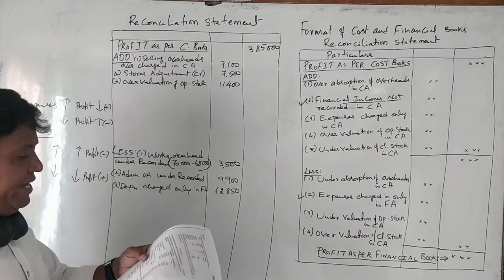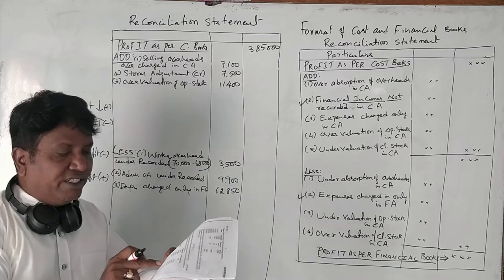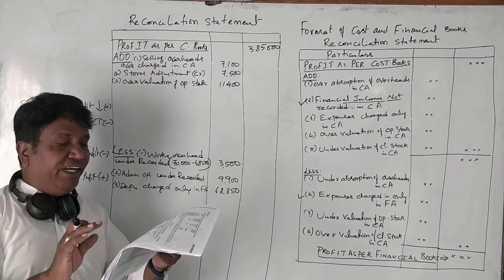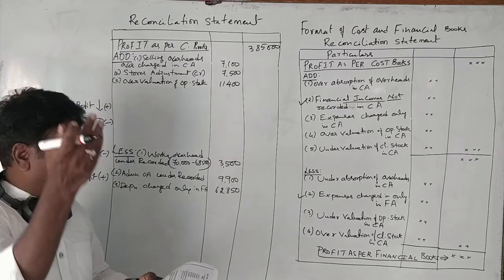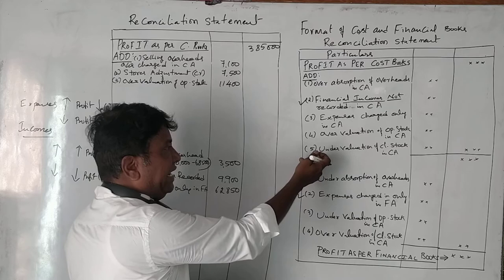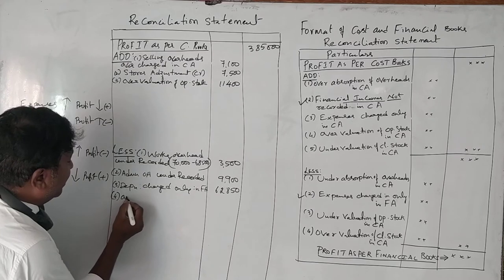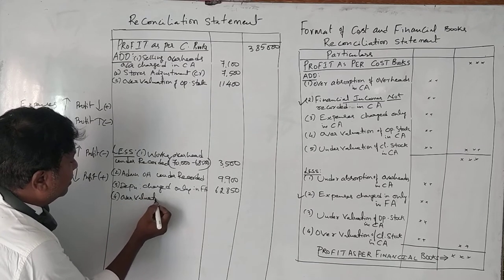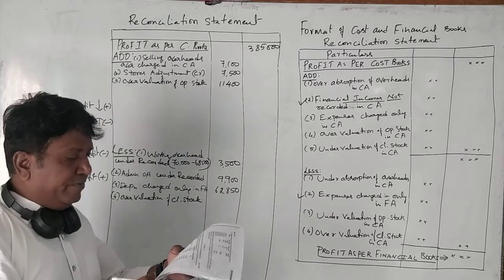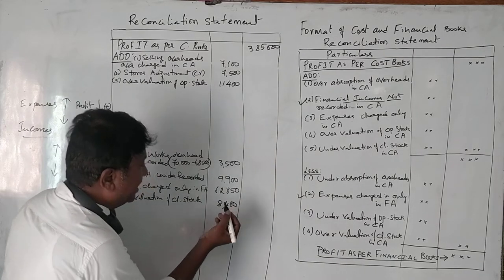Next is value of closing stock. In cost accounting it is 94,800; in financial books it is 86,400. Closing stock is over-valued in cost accounting. Under-valuation of closing stock should be added, and over-valuation should be deducted. So over-valuation of closing stock in cost accounting: 8,400 rupees to be deducted.